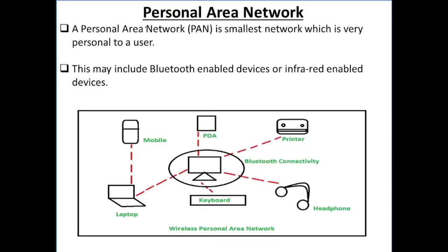Next we have Personal Area Network. A Personal Area Network is the smallest network which is very personal to its users. Personal Area Network is the smallest network that the user creates for personal use. This may include Bluetooth-enabled devices and infrared-enabled devices.